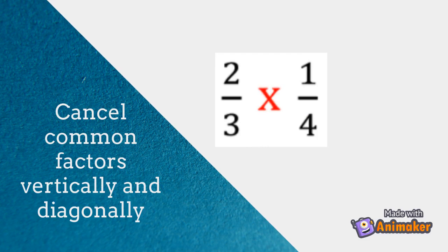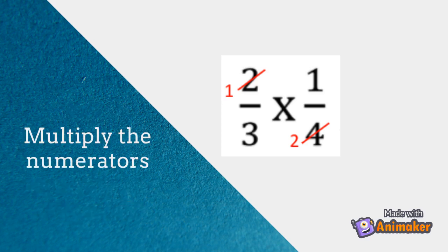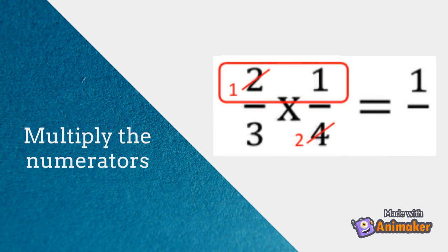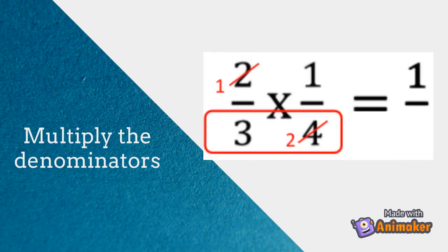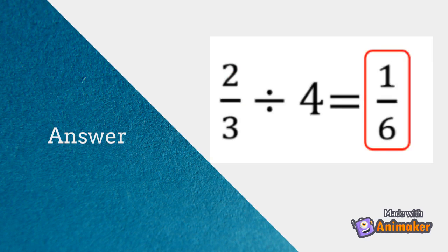Since 2 and 4 are both divisible by 2, we can divide both by 2. 2 divided by 2 is 1. 4 divided by 2 is 2. Multiply the numerators: 1 times 1 equals 1. Multiply the denominators: 3 times 2 equals 6. So the answer of 2 thirds divided by 4 is 1 sixth.